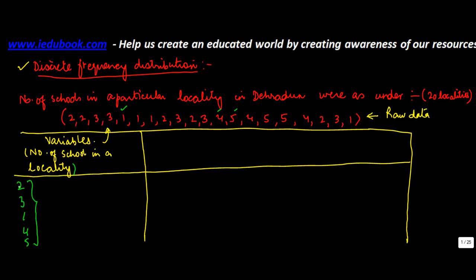As I look at them, I can put them in the same form. If you notice, this is basically 1, 2, 3, 4, 5. So if I write this as 1, 2, 3, 4, and 5, it becomes relatively easier and simpler for anyone to understand. In a discrete frequency distribution, you put the raw data into a tabular form where it can be easily comprehended. Step 1 is to put in all the variables into this column.